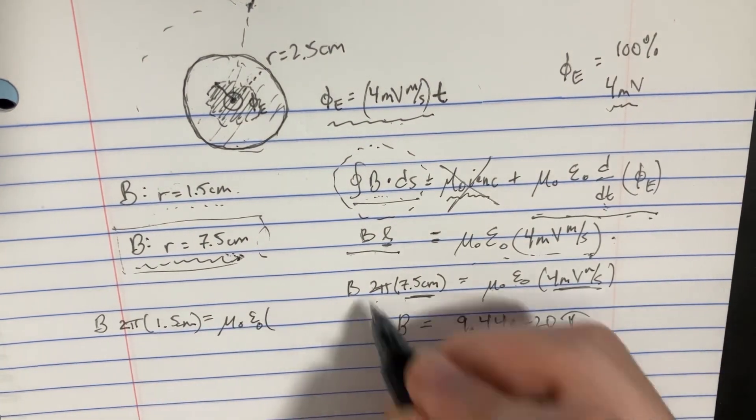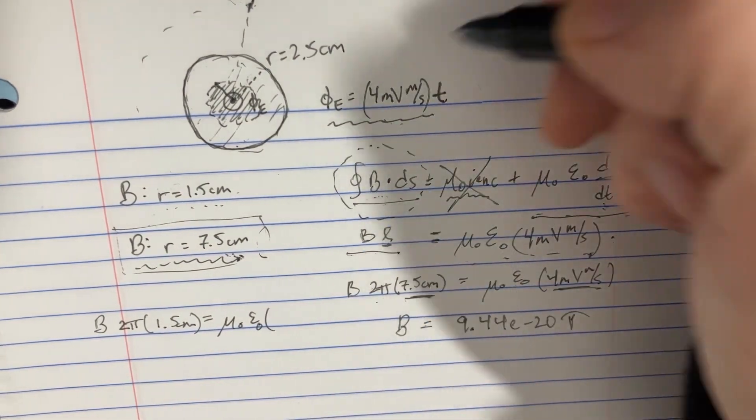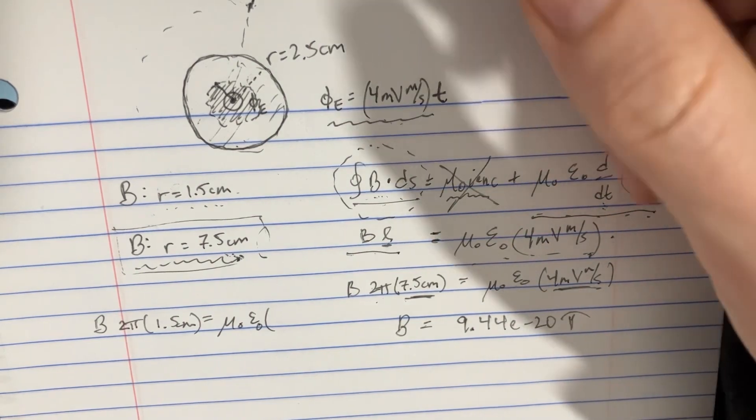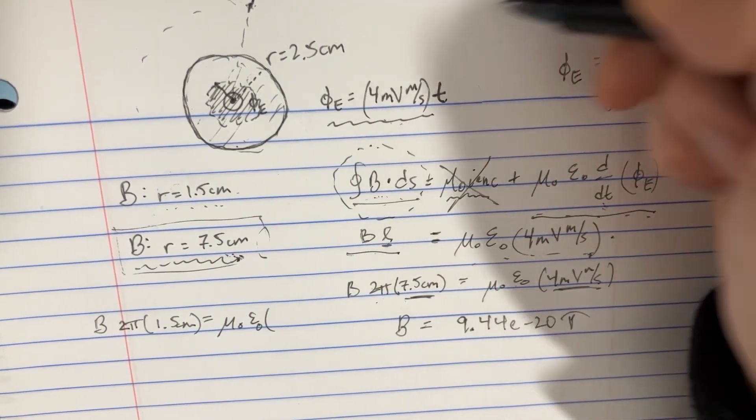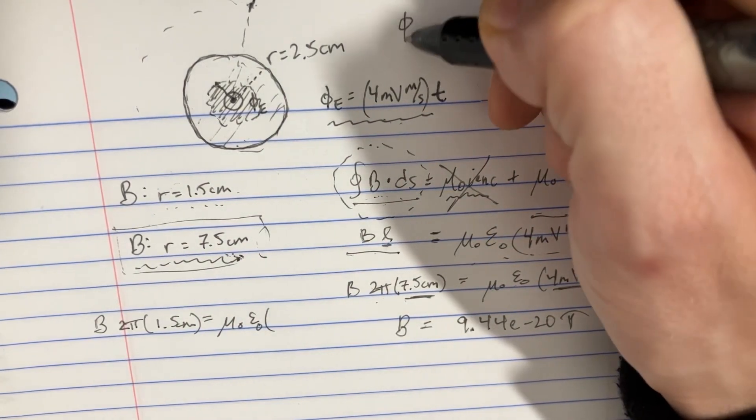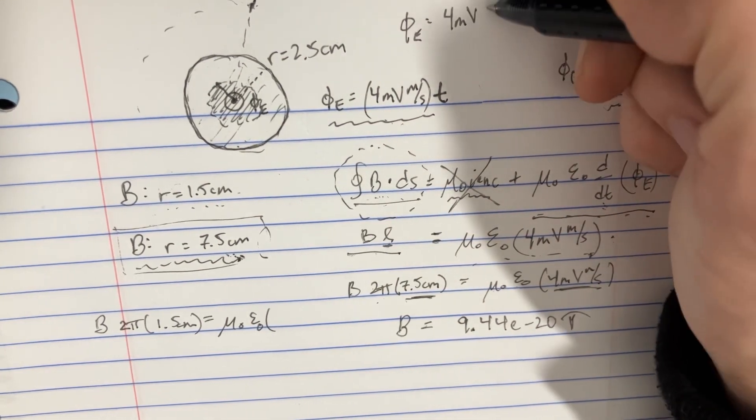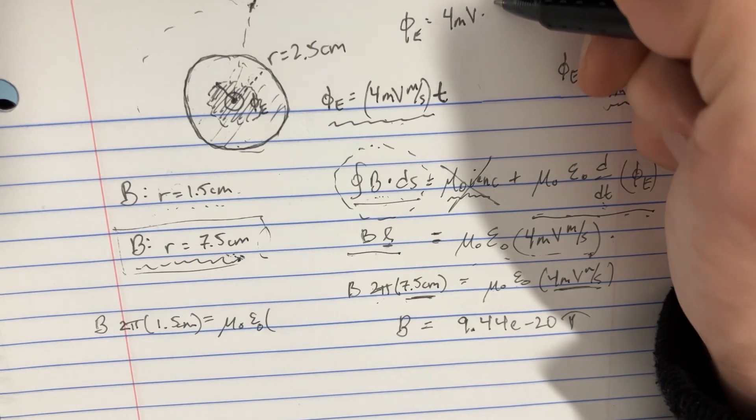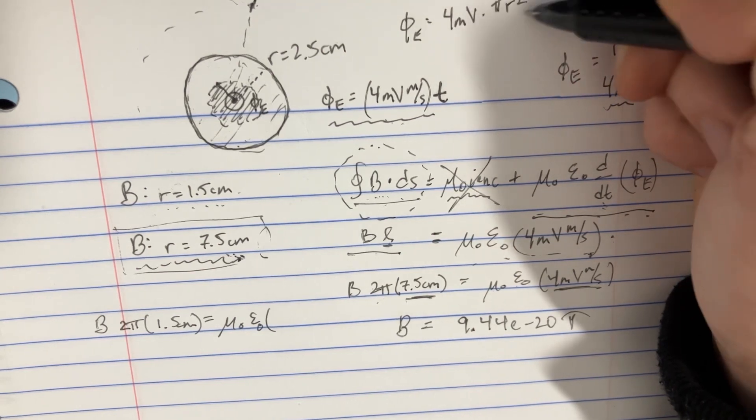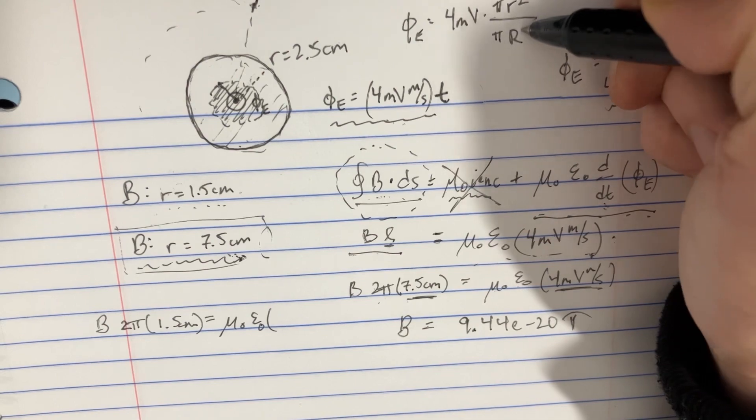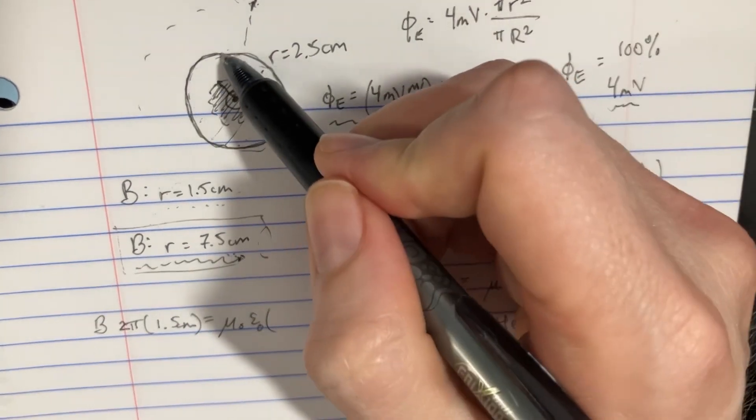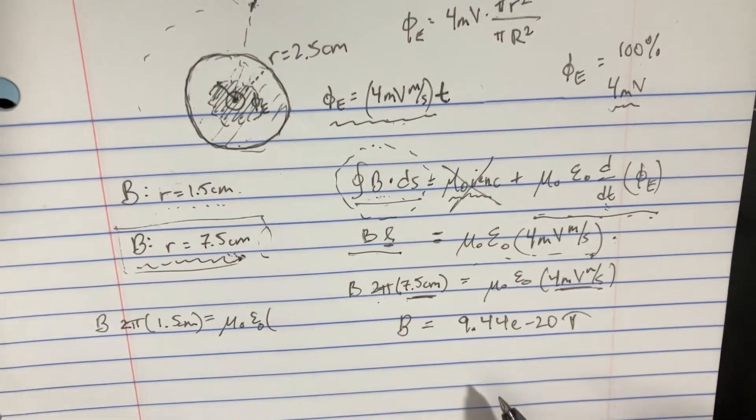So instead of using 4, we have to do the ratios. So we're going to basically say the electric flux is really equal to the 4 millivolts times, on the top, we'd have pi r squared, that's the smaller one. And on the bottom, we'd have the pi r squared, that's the bigger one, that's the full length.